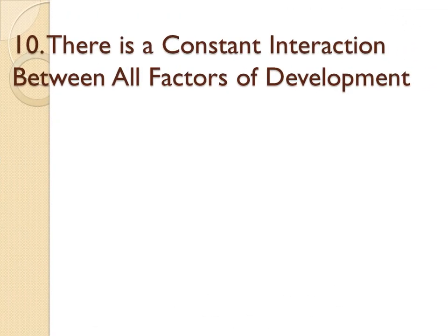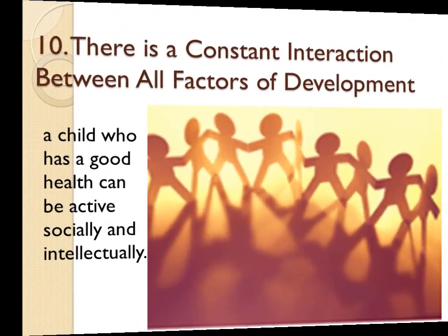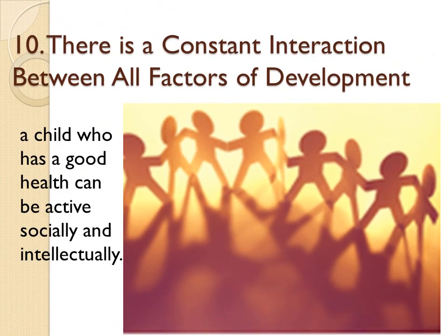The last principle is that there is a constant interaction between all factors of development. It means development in one area is highly related to development in other areas. For example, a child who has good health can be active socially and intellectually.